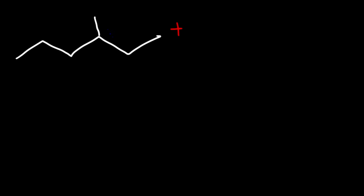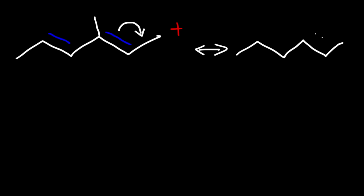Go ahead and try this problem: draw as many resonance structures as you can and identify which one is the major resonance contributor, or which resonance structure is the most stable. The pi bond is going to move towards the carbocation, and the positive charge is going to jump two carbons towards the pi bond. So the positive charge will now be here — that's one resonance structure we can draw.